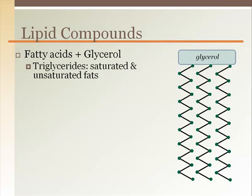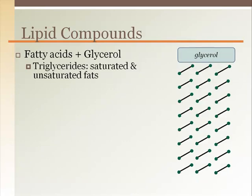Triglycerides are used for energy. The long fatty acid chains are broken down to two carbon segments, which are converted into acetyl-CoA to enter the Krebs cycle. One triglyceride molecule can have around 25 to 100 carbon atoms. This is remarkable when you compare that to one glucose molecule, which will yield as much as four carbon atoms or two segments.